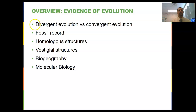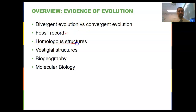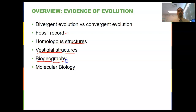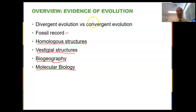Some of the evidence we have for evolution includes divergent evolution versus convergent evolution, the fossil record, homologous structures, vestigial structures, biogeography — looking at where different species are located and similarities in those areas — and molecular biology or basic genetics. These are all different pieces of evidence that support the theory of evolution.